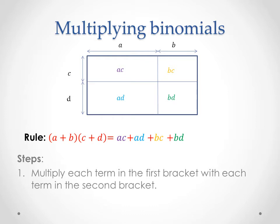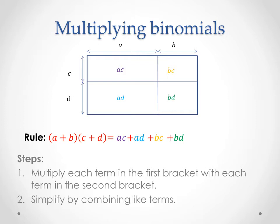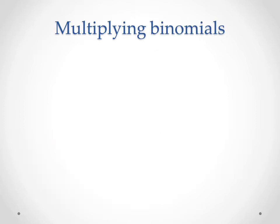So just pause the video and write this down. Make sure that you follow these steps when we go to do our examples. Our first step is: multiply each term in the first bracket with each term in the second bracket — you'll always end up with four terms when multiplying a binomial by another binomial. Our second step: simplify by combining like terms if we can.